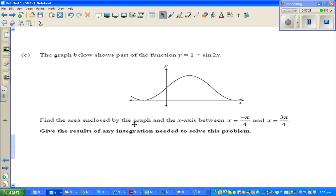Find the area enclosed by the graph. This is the graph. And the x-axis. This is the x-axis. Between x is minus pi by 4 and x is 3 pi by 4. So this is minus pi by 4 and this is 3 pi by 4. And you want to find the area under this curve.